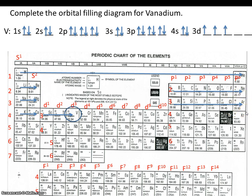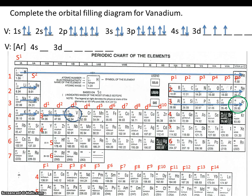So we'll start our shorthand orbital filling diagram at argon. Just like before, indicate that vanadium is the element you're completing the diagram for. Start with argon, and then just pick up where we left off — argon, then 4s, then 3d — and complete it just the same way you did the longhand. This is the orbital filling diagram for vanadium using the shorthand method.